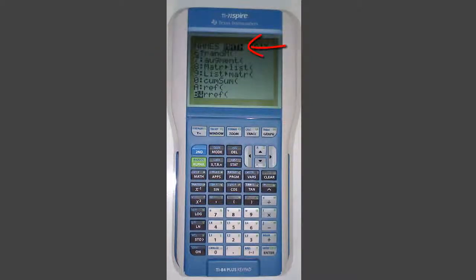Tab over to the Math menu using the arrow keys and scroll down until you see R-Ref. Press Enter. R-Ref will appear on your display.